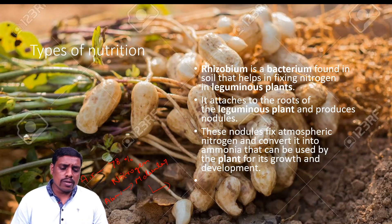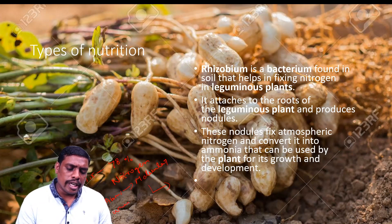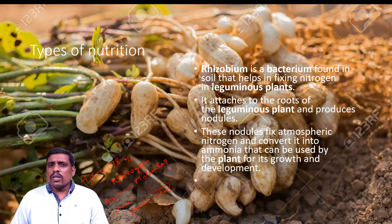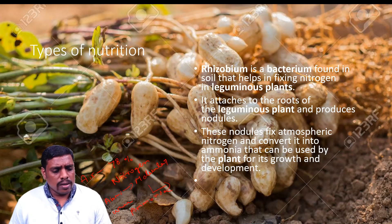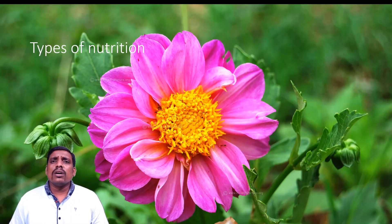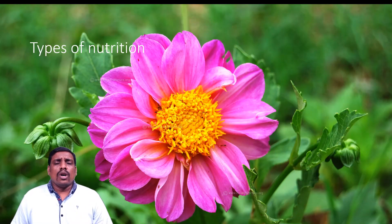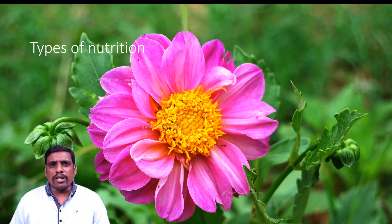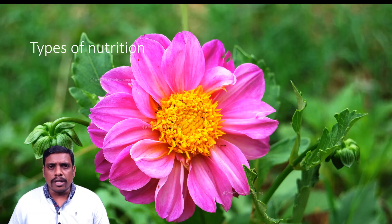Crystal or fixed nitrogen includes compounds like urea, uric acid, ammonia, and nitrates. These are very beneficial forms produced through reactions carried out by Rhizobium bacteria, also called nitrogen-fixing bacteria, in leguminous crops.